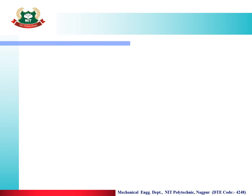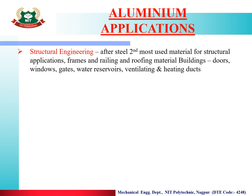The applications of aluminium: it is most widely used in structural engineering. After steel, it is the second most used material for structural applications — frames, railings, roofing material, buildings, doors, windows, gates, water reservoirs, ventilators and heating. This is an important exam question: which metal is second after steel in structural engineering? The answer is aluminium.